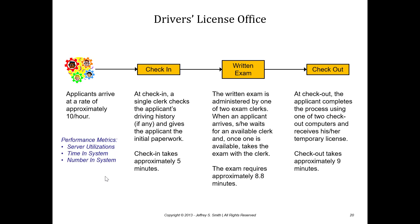The third and final phase is to go to checkout. At checkout, the applicant will complete the process using one of two checkout computers, and then receive his or her temporary license. The checkout is going to take approximately nine minutes. We'll also assume an exponential distribution here with an average service time of nine minutes.